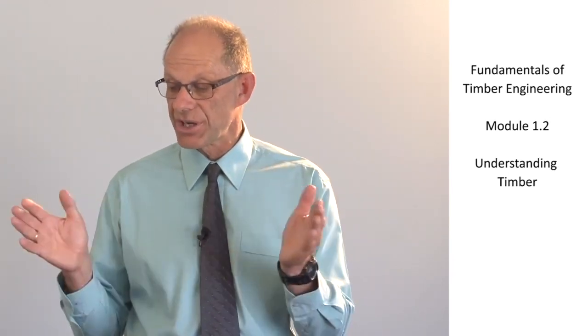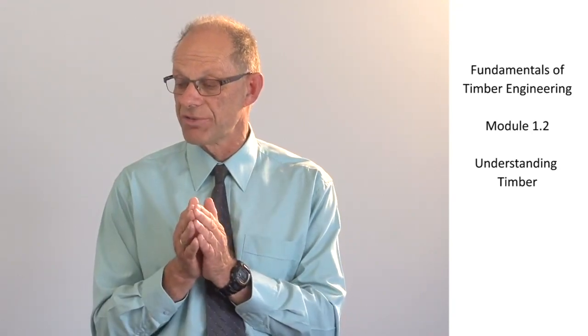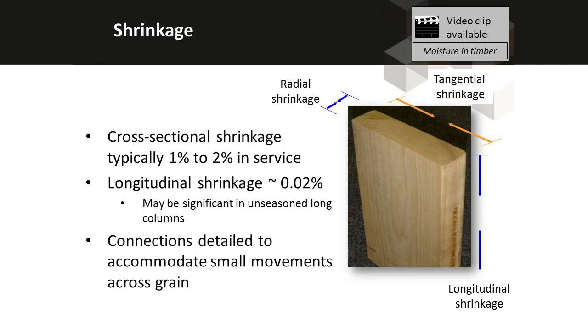It responds to the changes of moisture content by moving. And because it's the cell walls that are getting slightly thicker or thinner, it's going to shrink or swell perpendicular to the grain. There is a video clip on moisture in timber that explains this in a little bit more detail. But we get movement of timber in service of generally around 1-2% perpendicular to the grain and about a tenth of that parallel to the grain in the pieces of timber.